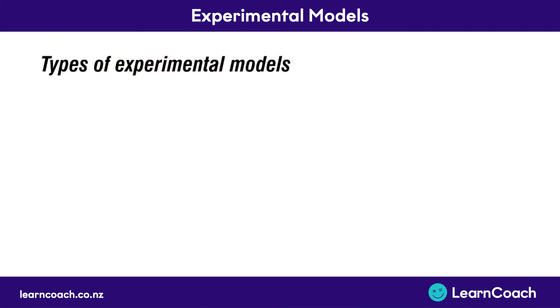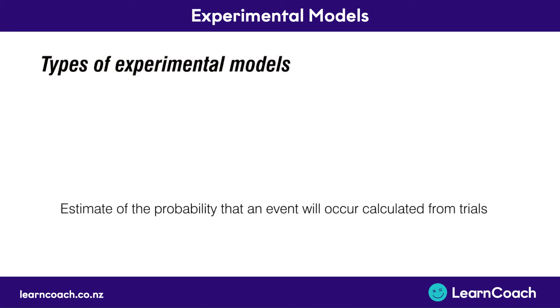In this video, we're going to learn about the types of experimental models in this standard. An experimental model is an estimate of the probability that an event will occur, and this is calculated from trials.